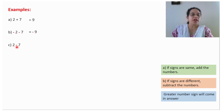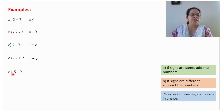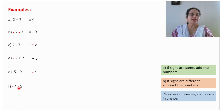Signs are different, subtract the number — 7 minus 2 will give you 5 — greater number sign will come in the answer, so the answer will be minus 5. Signs are different, subtract the number — 7 minus 2 will be 5 — greater number sign will come in the answer, so the answer will be plus 5. Signs are different, subtract the number — 9 minus 5 will give you 4 — greater number sign will come in the answer, so the answer will be minus 4. Signs are same, add the number — 5 plus 4 will give you 9 — greater number sign will come in the answer, so the answer will be minus 9.